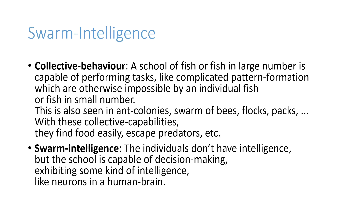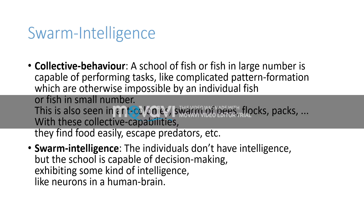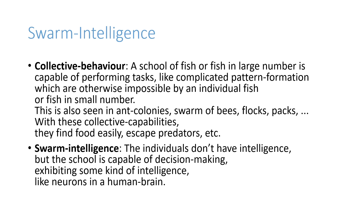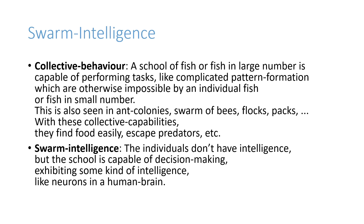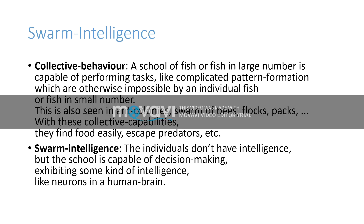The collective behavior of a group of organisms, like a school of fish, is different from the individual behavior. A school of fish, for example, will be able to perform complicated tasks like pattern formation, which is otherwise impossible by an individual fish. This is seen in ant colonies, bees, swarms, flocks, packs, etc. With this collective behavior they are able to find food easily and escape predators. In swarm intelligence, the individual organisms don't have considerable intelligence, but they are able to exhibit some kind of intelligence and make decisions through communication with each other — like neurons in the central nervous system.